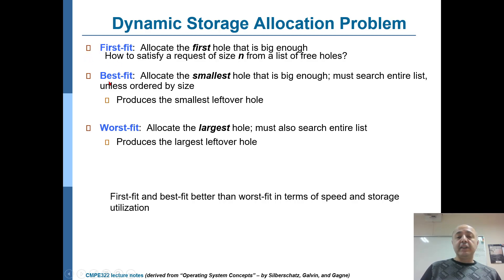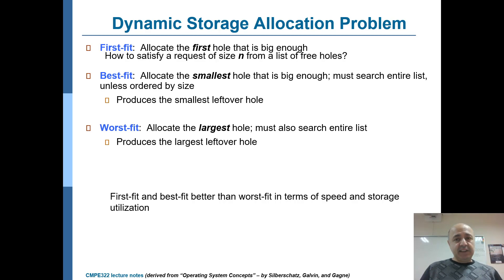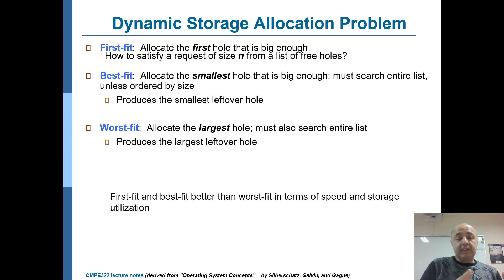The other option is best fit, which allocates the smallest hole that fits. For example, if process 11 requires 50 kilobytes of RAM and you have holes of 60 kilobytes, 80 kilobytes, and 100 kilobytes, you pick the 60 kilobyte hole — that's the best fit. It's not exactly 50, but it leaves the smallest leftover hole.